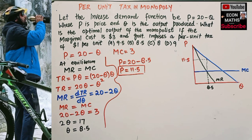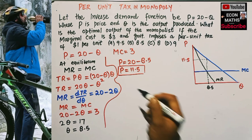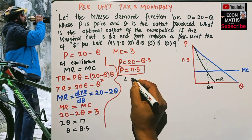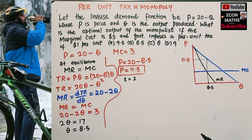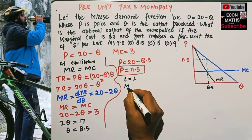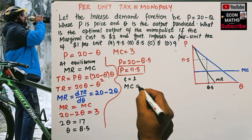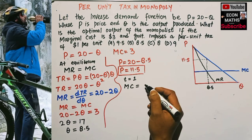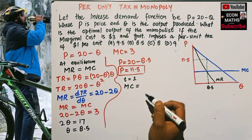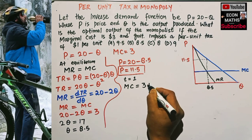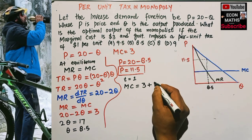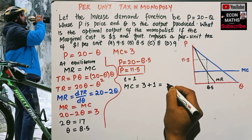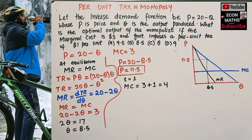Now when the tax is being imposed — a $1 per unit tax — what happens to our marginal cost? The marginal cost function of the monopolist will shift up. Initially our marginal cost was 3; we add the per unit tax of 1, which gives us a new marginal cost of 4.